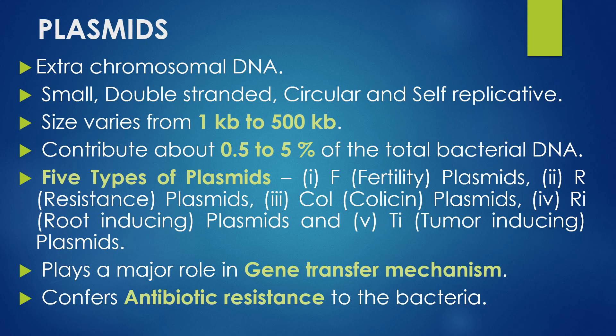Plasmids are extra-chromosomal DNA. They are small, double-stranded, circular, and self-replicative. The size of plasmids varies from 1 kb to 500 kb and they contribute about 0.5 to 5% of the total bacterial DNA. Plasmids are categorized into five types based on function: F-plasmids (fertility plasmids), R-plasmids (resistant plasmids), Col-plasmids (colicin plasmids), Ri-plasmids (root-inducing plasmids), and Ti-plasmids (tumor-inducing plasmids). Plasmids play a major role in gene transfer mechanisms like conjugation, transformation, and transduction, and also confer antibiotic resistance to bacteria.